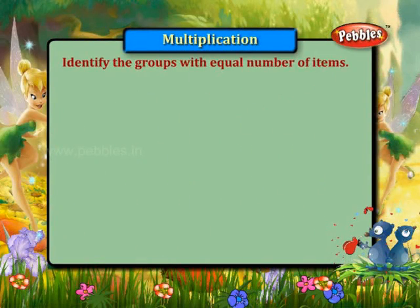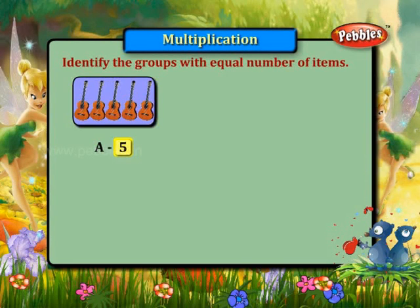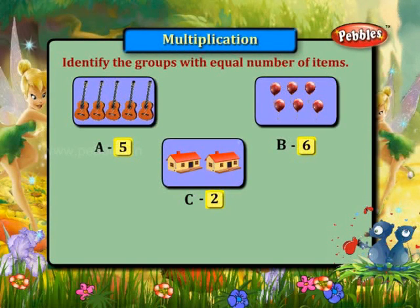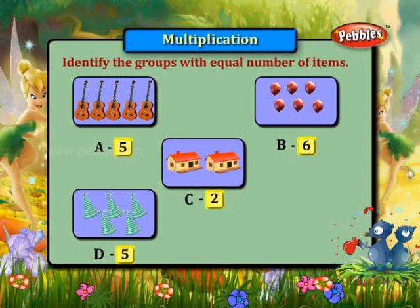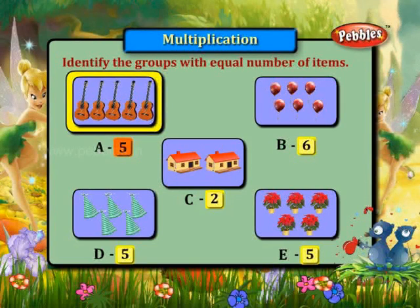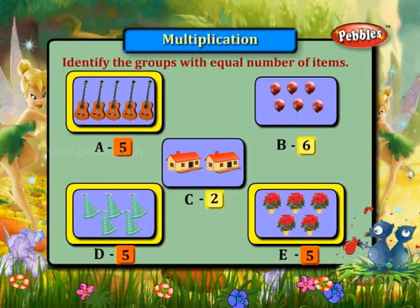Identify the groups with equal number of items. Group A has five guitars. Group B has six balloons. Group C has two houses. Group D has five caps. Group E has five plants. The groups A, D, and E have equal number of items.